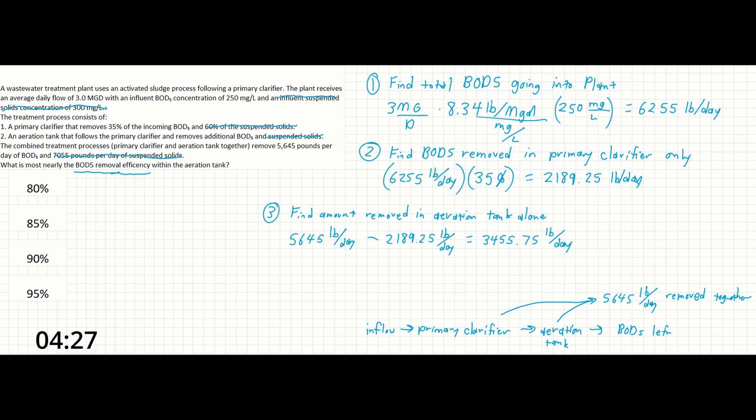Now finally, in step four, we can calculate the efficiency of the aeration tank. We know the total amount removed by the first process, the primary clarifier, and now we know how much was removed by the second process, the aeration tank. So we just need to determine how much was present directly before the aeration tank process and then divide the amount specifically removed by the aeration tank by that number to get our efficiency.